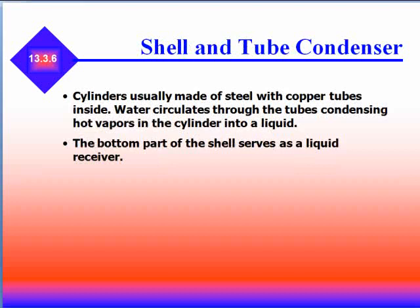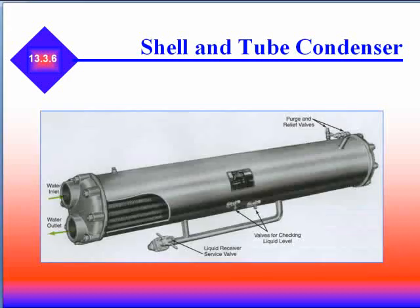In a shell and tube condenser, cylinders are usually made of steel with copper tubes inside. Water circulates through the tubes, condensing the hot vapor in the cylinder into a liquid. The bottom part of the shell serves as a liquid receiver. This is an example of a shell and tube condenser — water inlet, water outlet, and notice the liquid comes out of the bottom.